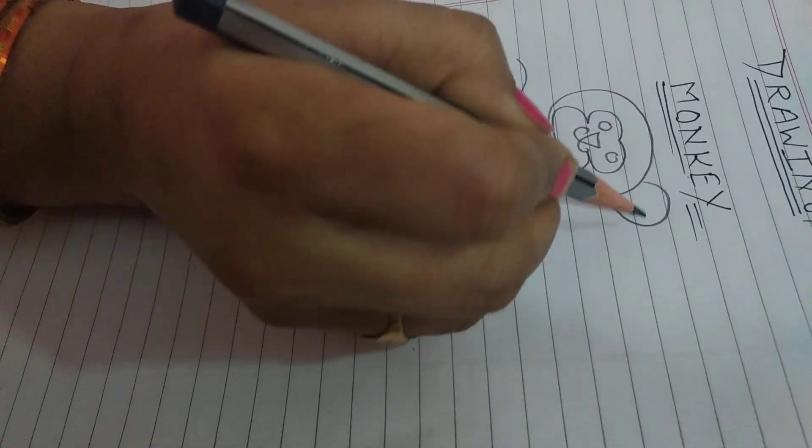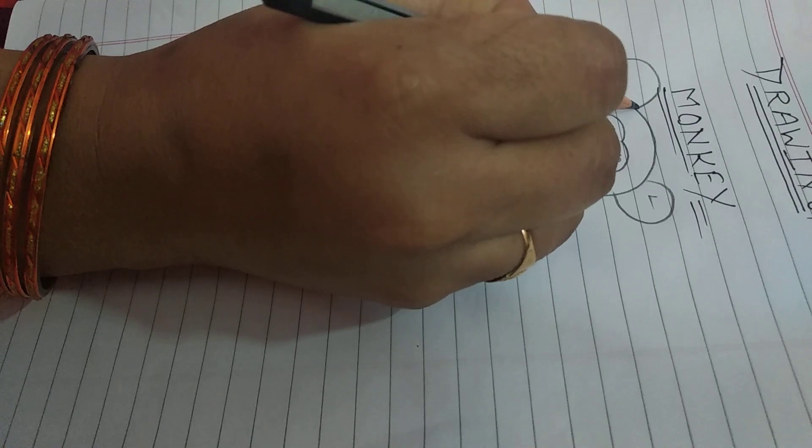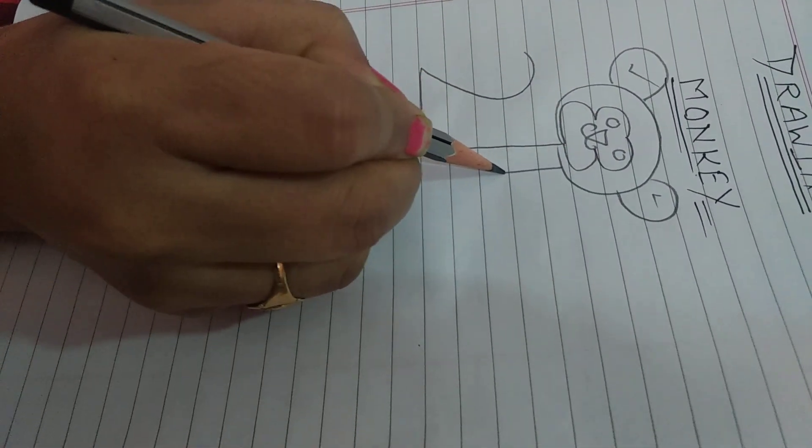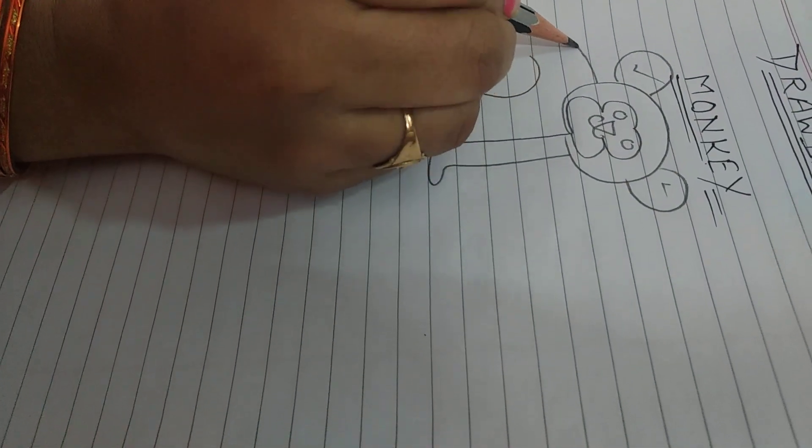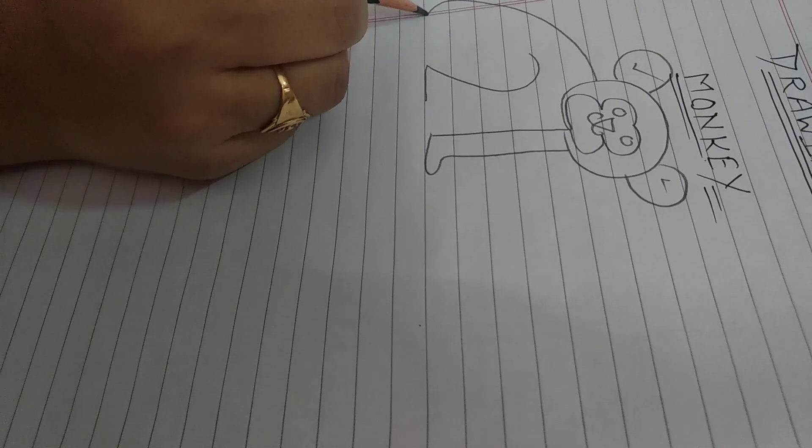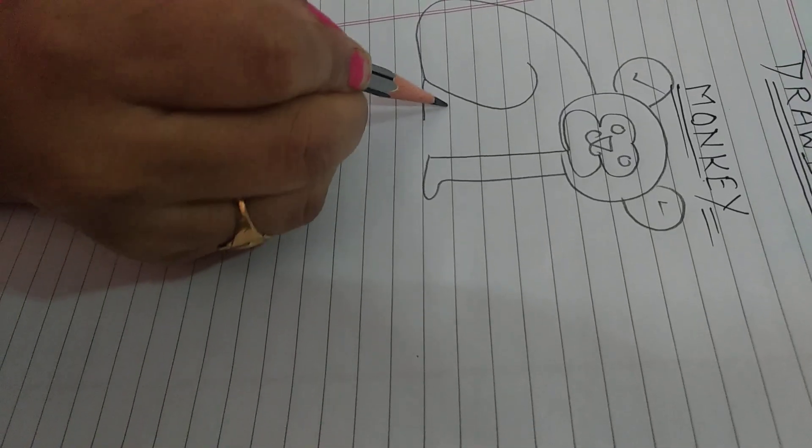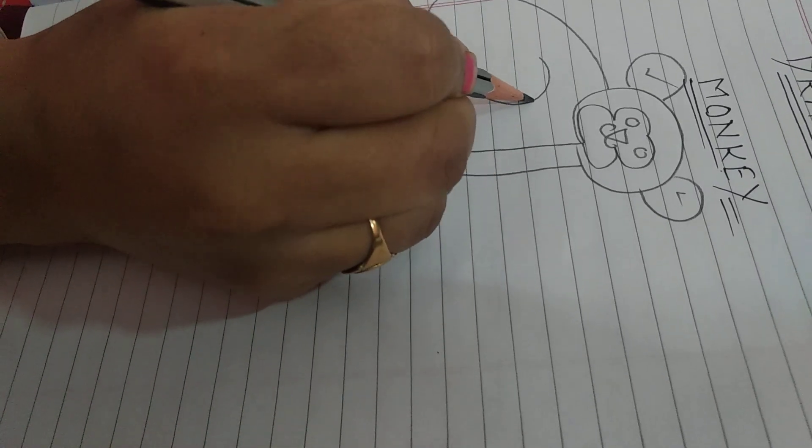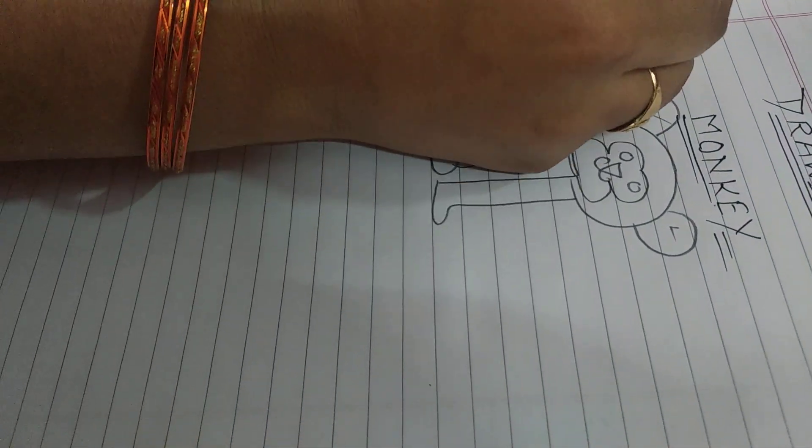One more circle, one more circle in another direction and another one and join them. One C, joint in two and one tail.